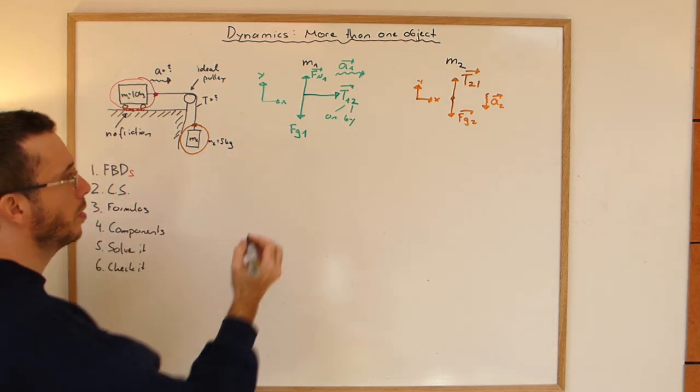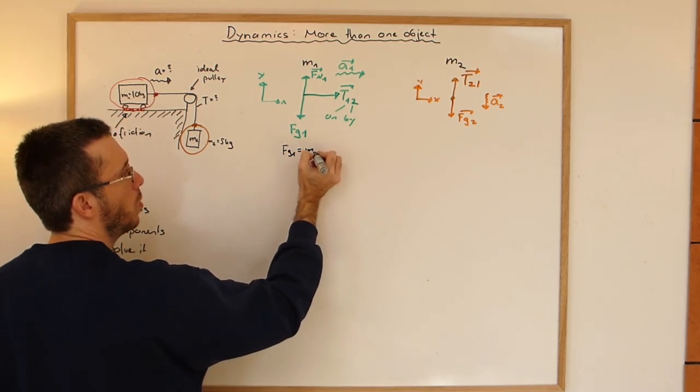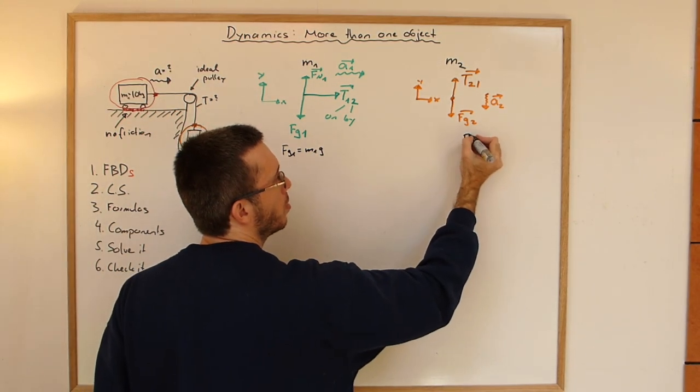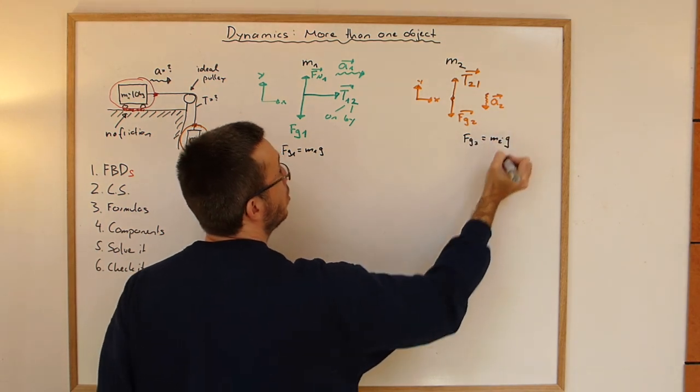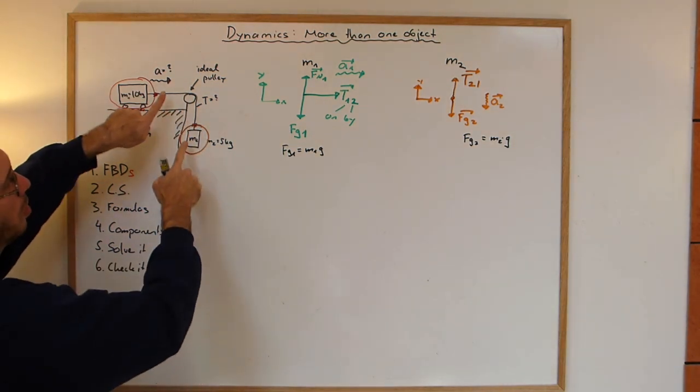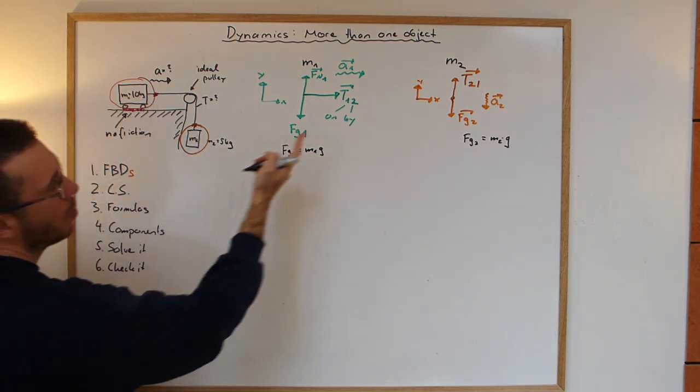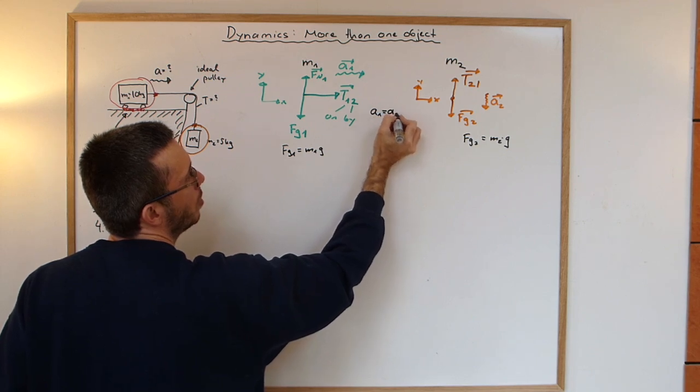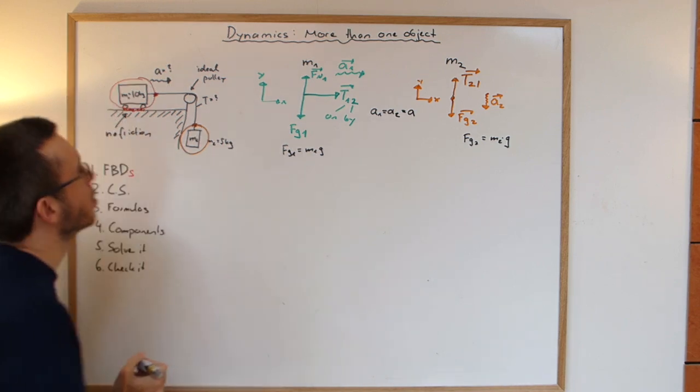Well here I have gravity. So I have Fg1 is m1 times g. Then if there is a cable that has no slack and that's not flexible, that means if this one moves a bit, this one has to move the same amount. So the two accelerations must be same. So A1 is equal to A2. And let's just call this A, this acceleration.